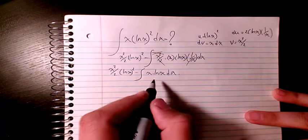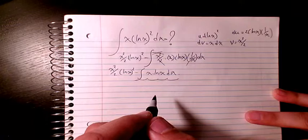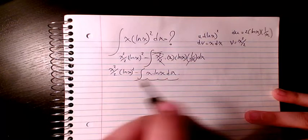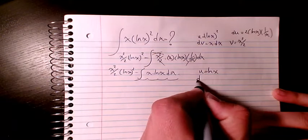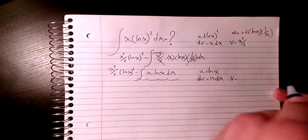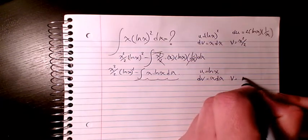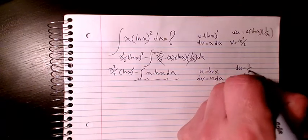So what about the integration of this one? In order to solve it, we need to do another integration by parts. So I can say u is ln x and dv is x dx, so v will be x squared divided by 2, and du will be 1 over x dx.